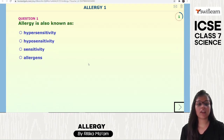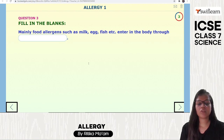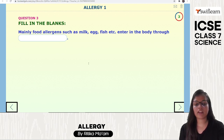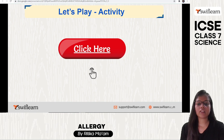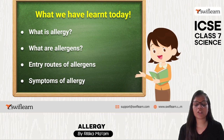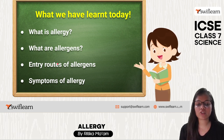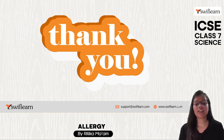Let's review what we learned today. Allergy is also known as hypersensitivity. The substances that cause allergy are called allergens. Food allergens such as milk, fish, and egg enter our body through the mouth. Today we learned about allergy, allergens, entry routes of allergens, and symptoms of allergy. We will meet in the next session to learn a bit more about allergy. Book your free trial class and see you next time!